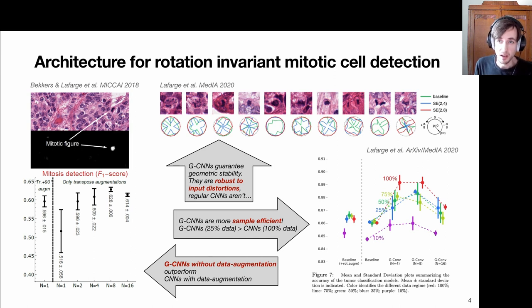Finally, we showed in this paper that group convolutions are more sample efficient. For example, these are the baseline models trained with rotational augmentation. The colors indicate different levels of available data used for training. Red means we used 100% of the available data and purple means we only use 10%.